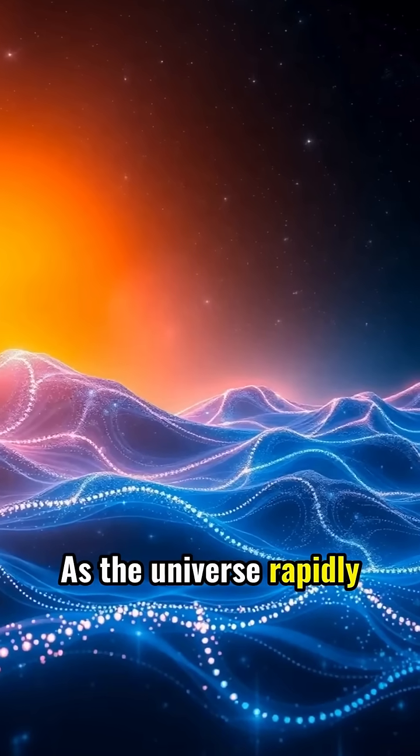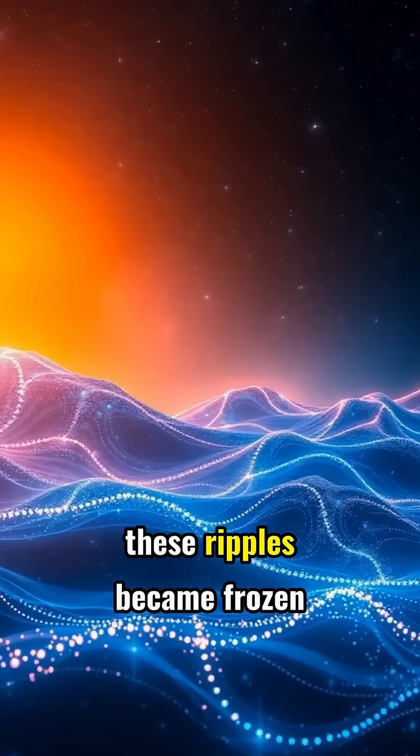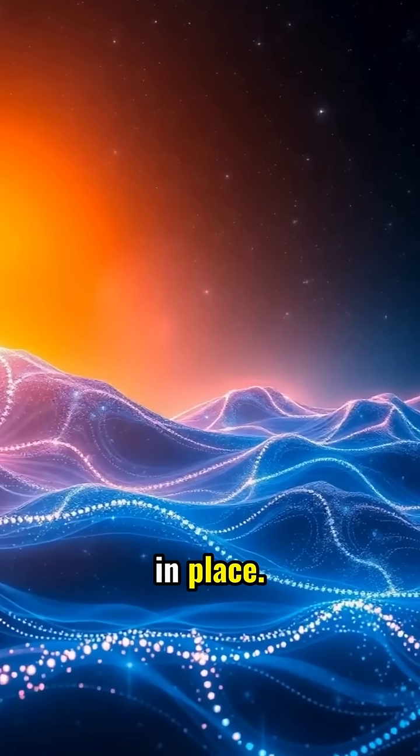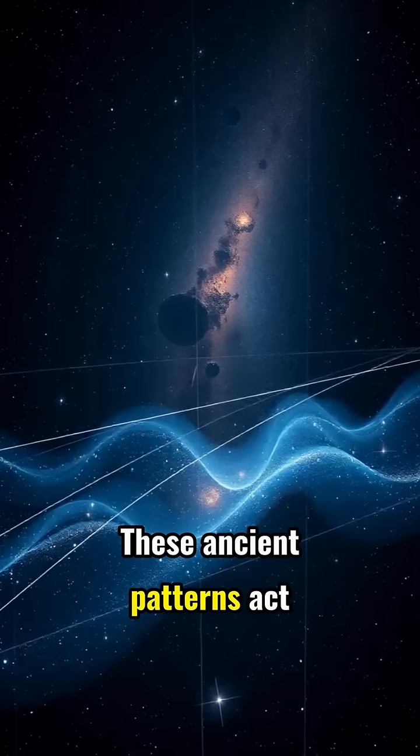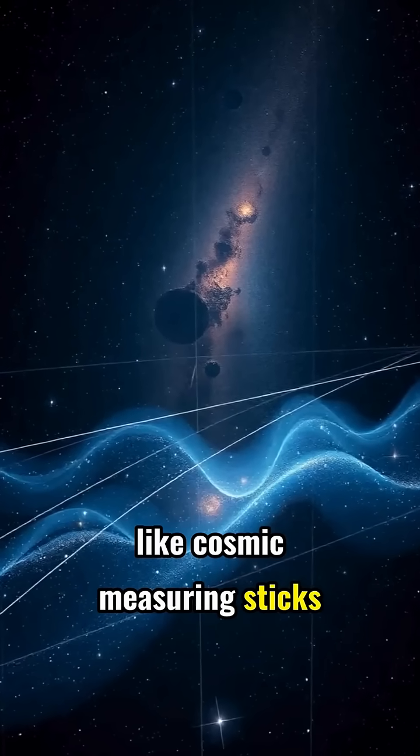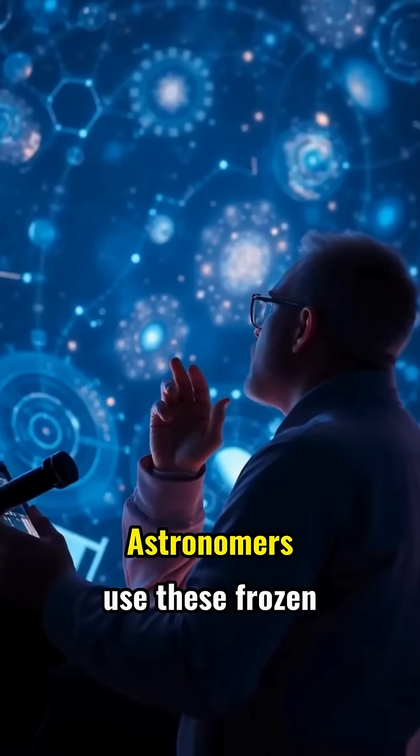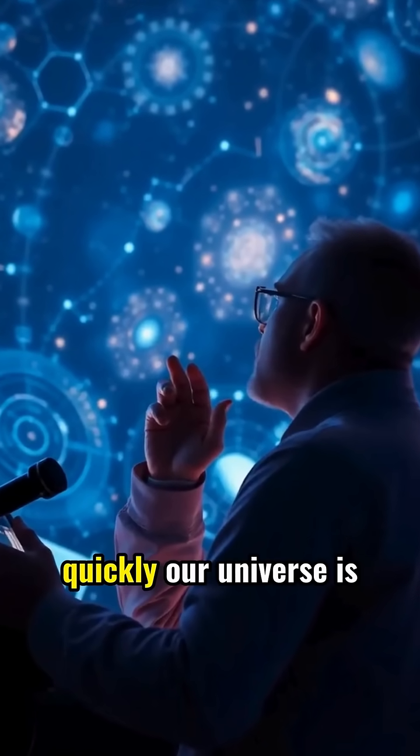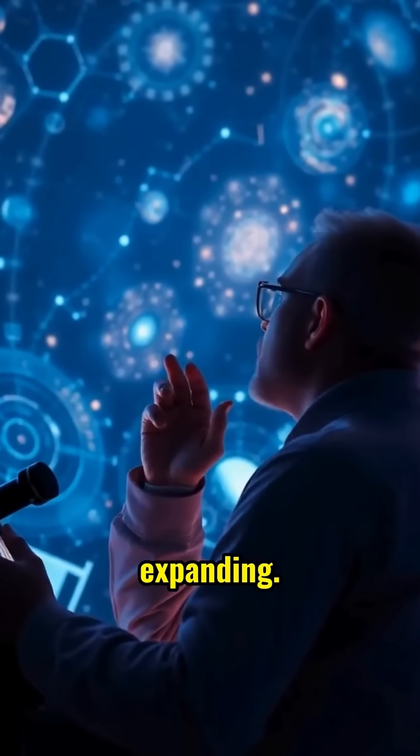As the universe rapidly cooled, these ripples became frozen in place. These ancient patterns act like cosmic measuring sticks across the universe. Astronomers use these frozen ripples to calculate how quickly our universe is expanding.